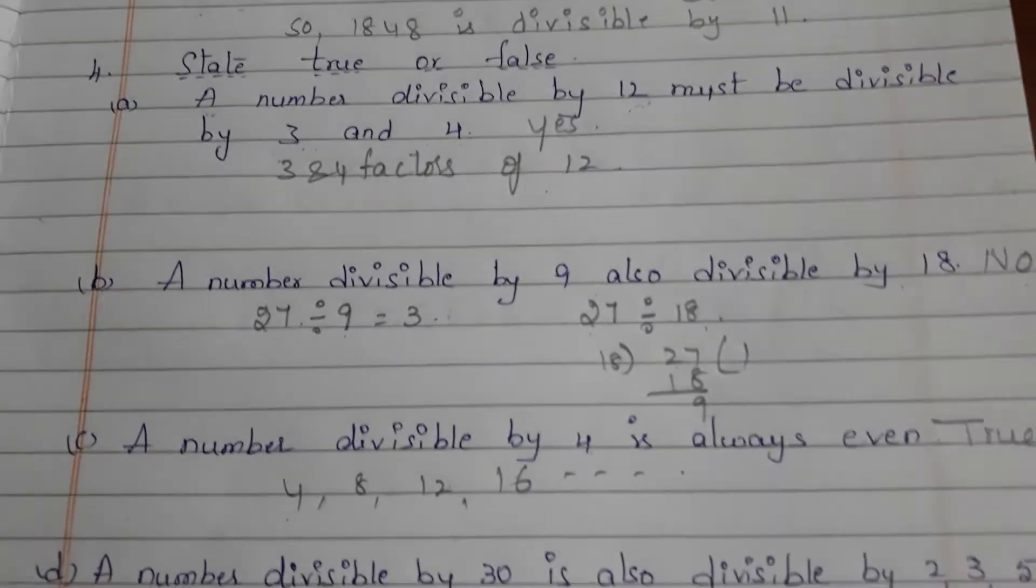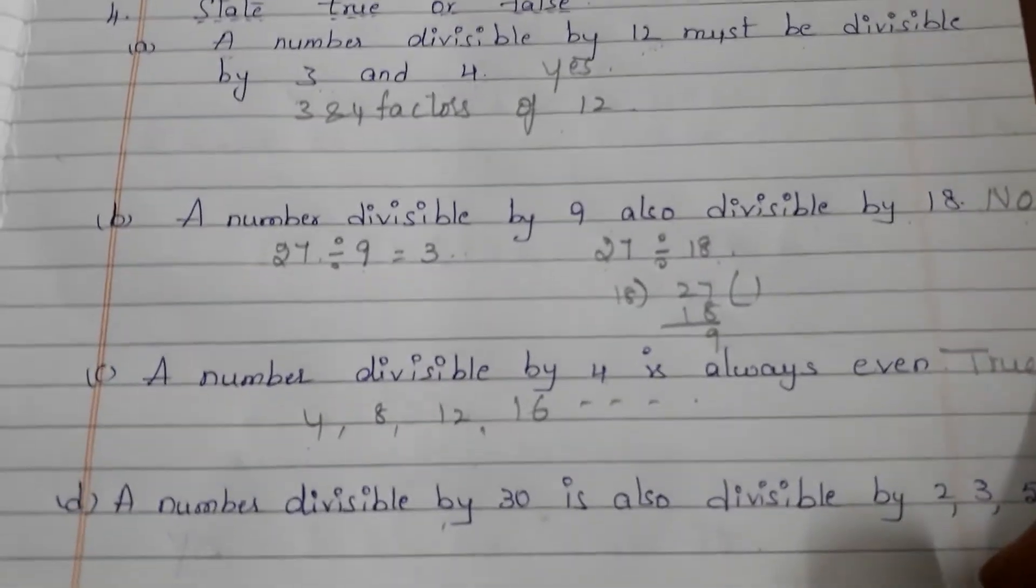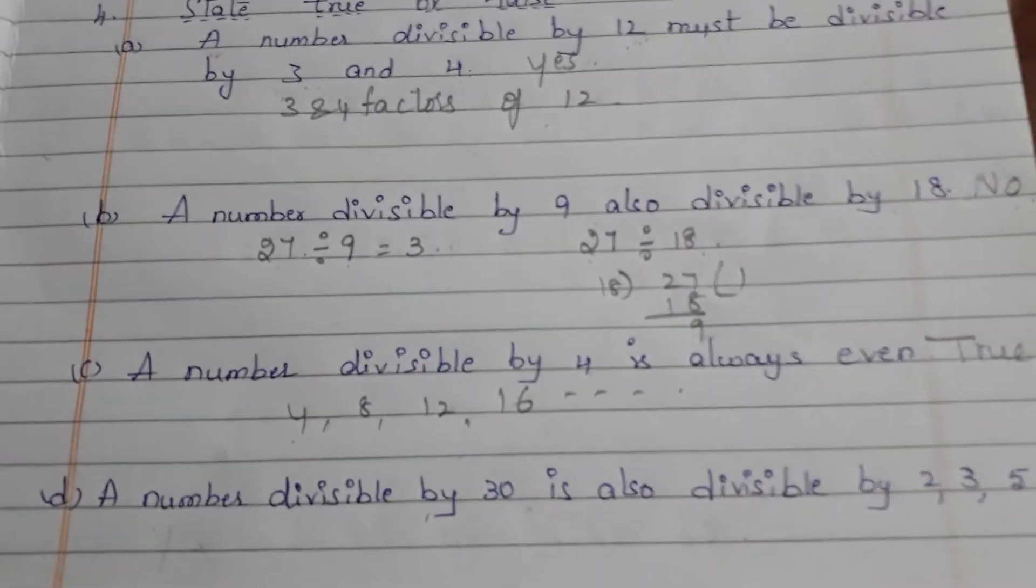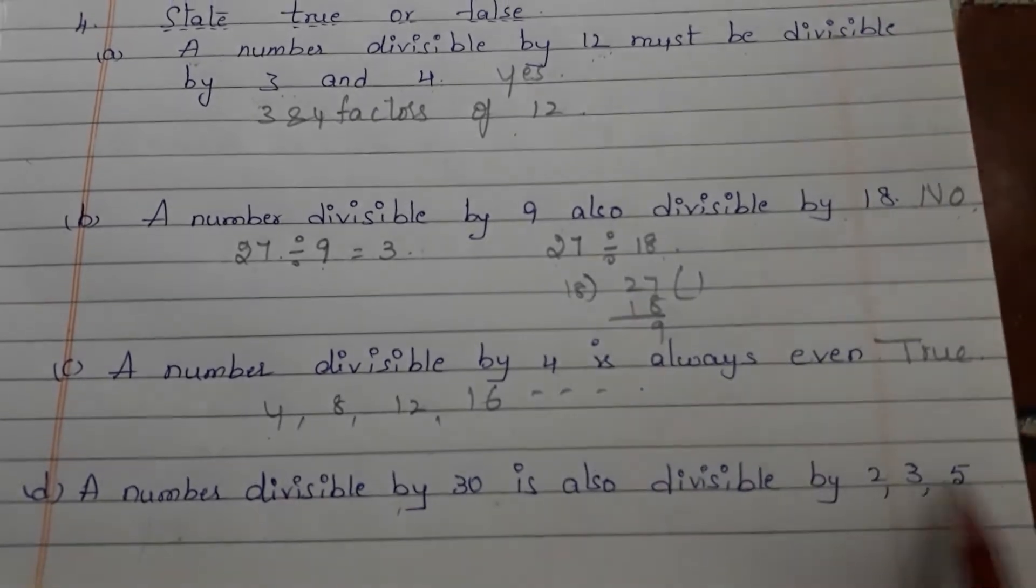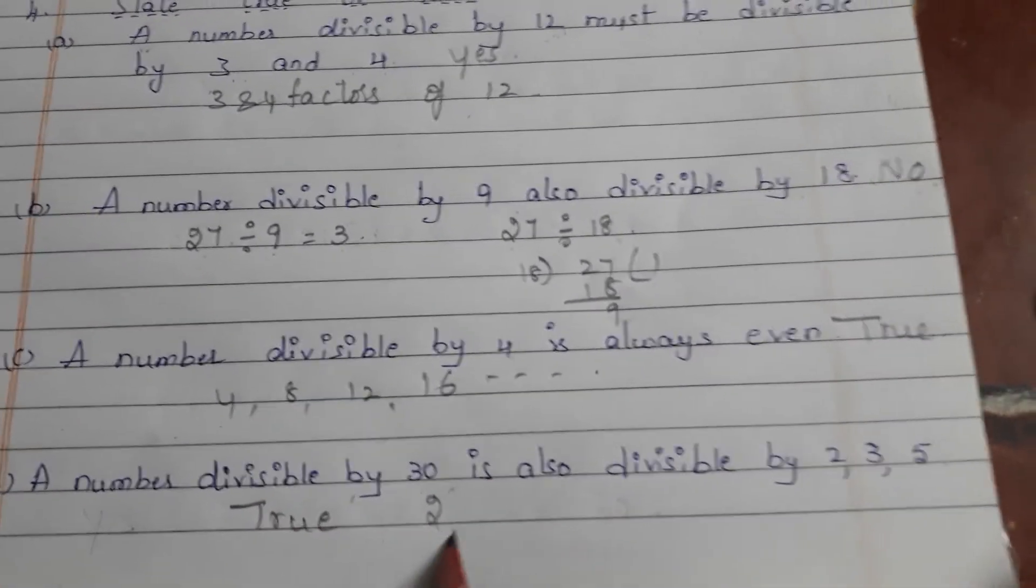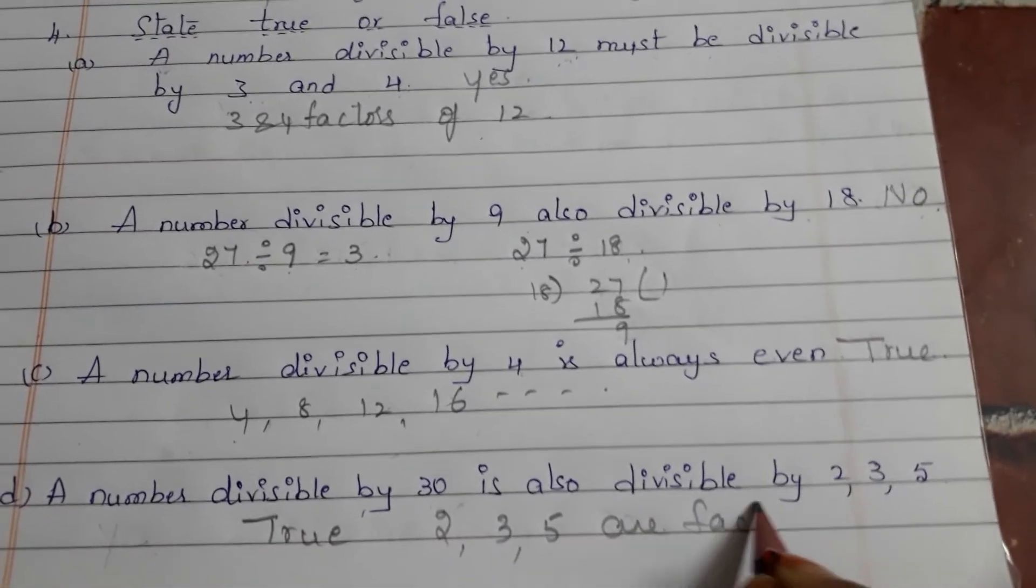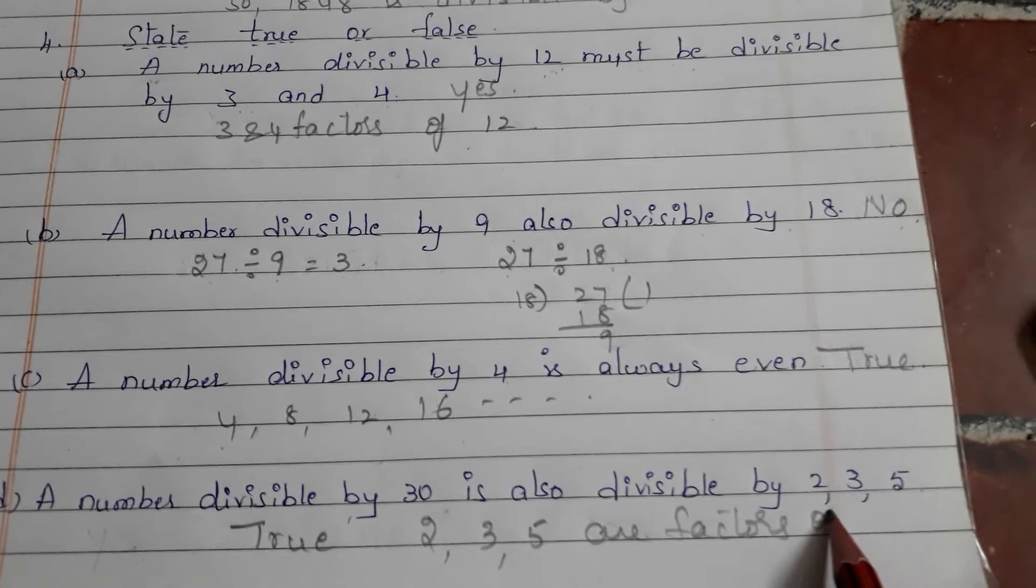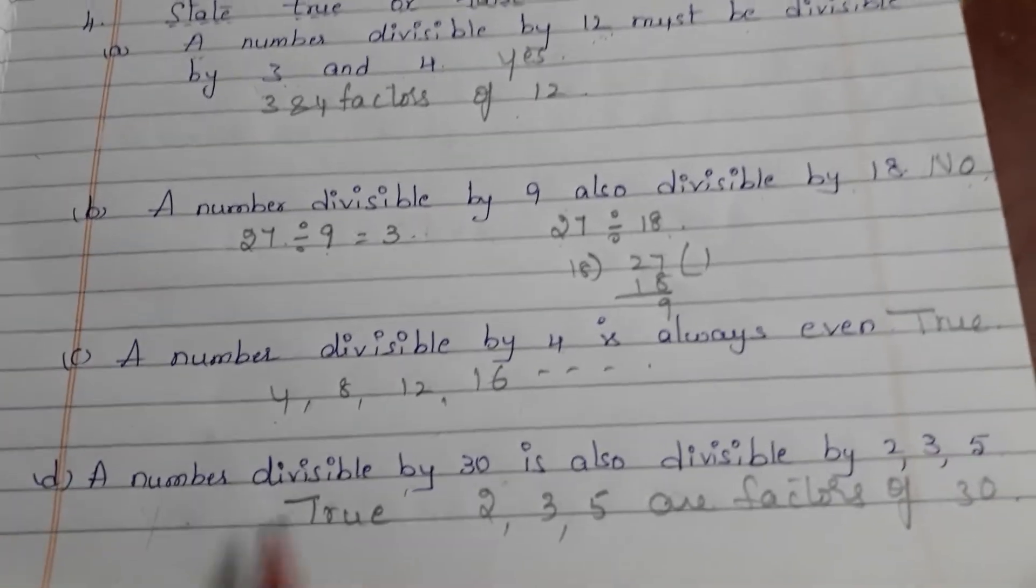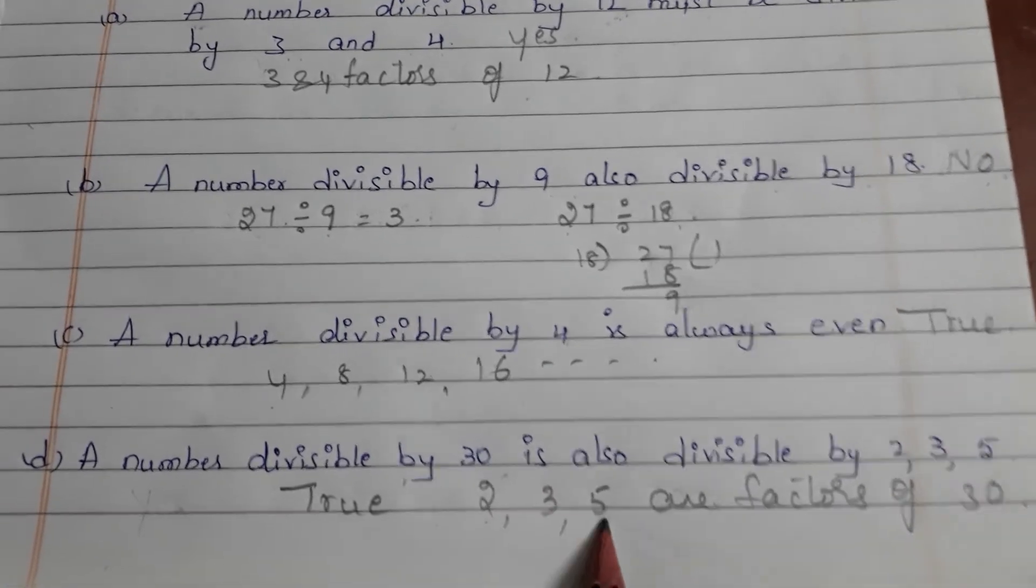Last one: a number divisible by 30 is also divisible by 2, 3, and 5. Yes, this is true. Why? Because 2, 3, and 5 are factors of 30. So a number divisible by 30 is also divisible by 2, 3, and 5.